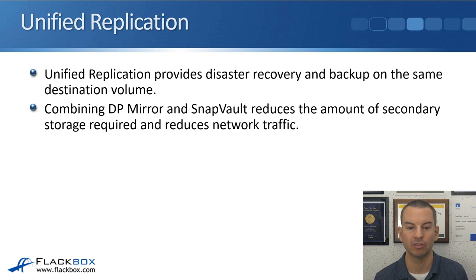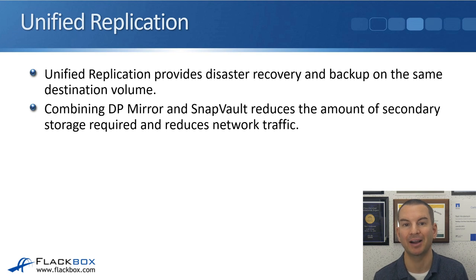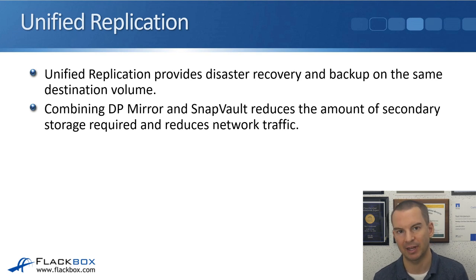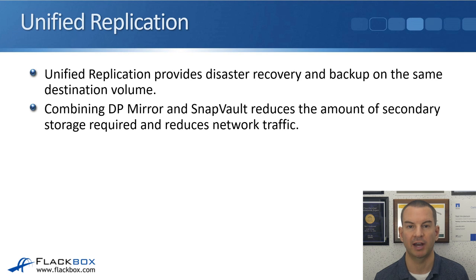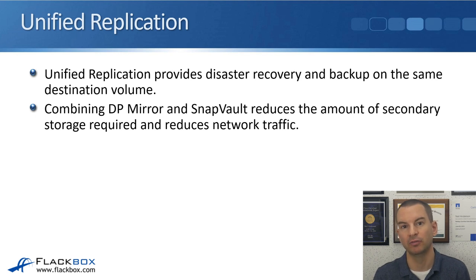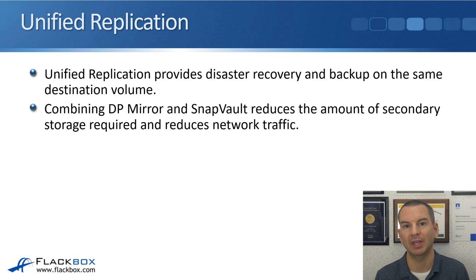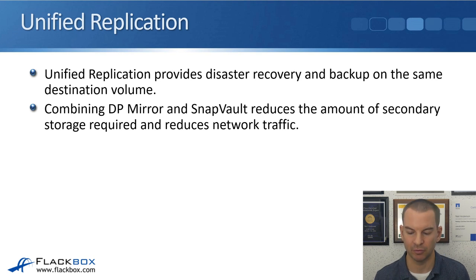There's also Unified Replication supported as well. With Unified Replication, it provides disaster recovery and backup on the same destination volume, using SnapMirror and SnapVault on the same destination volume. Combining DP Mirror and SnapVault reduces the amount of secondary storage required and reduces network traffic — rather than replicating to one volume for SnapMirror and a different volume for SnapVault, you replicate to a single destination volume that serves both purposes.